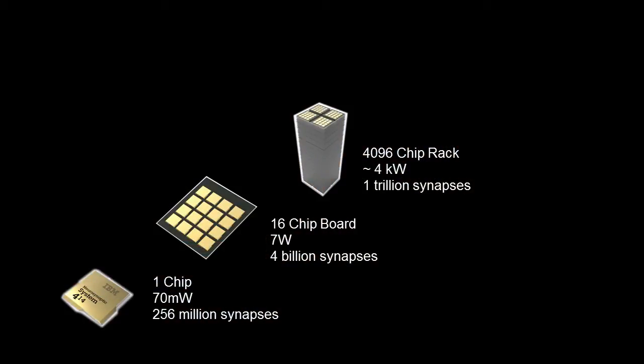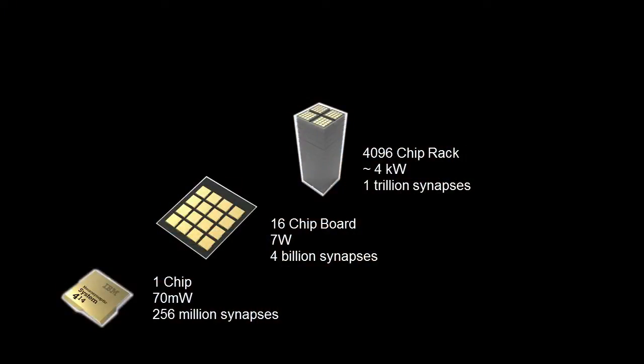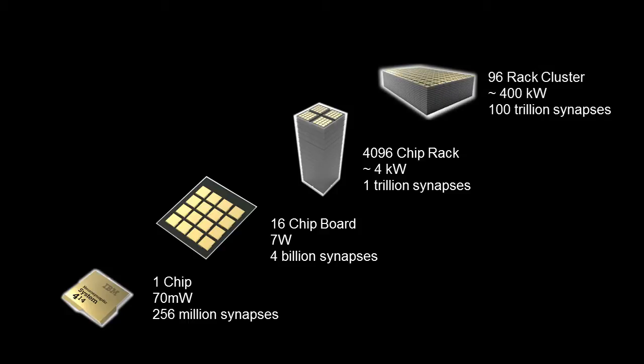If we put 256 boards together in a single rack, it creates a 4,096-chip system with 1 trillion synapses in a single computer — an unprecedented number. And it consumes almost just 4 kilowatts of power. If we connect 96 of those racks together, we can create a neural supercomputer with 100 trillion synapses and 400 billion neurons, consuming 400 kilowatts.